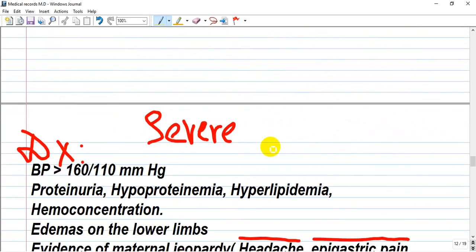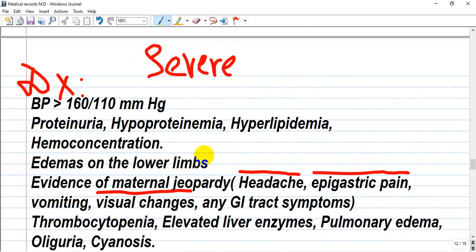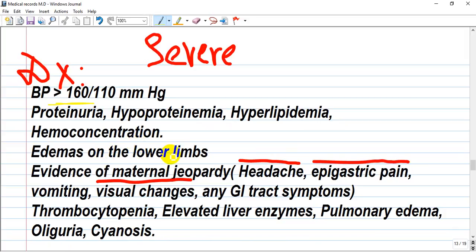The second type of preeclampsia is severe. Yes, it's more severe and I'll show you many special symptoms. Blood pressure is not more than 140, but more than 160. Here is also proteinuria, hypoproteinemia, hyperlipidemia - it's a relative one - and hemoconcentration.